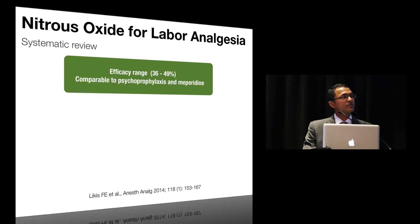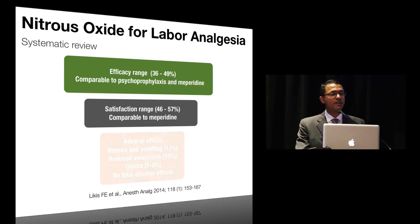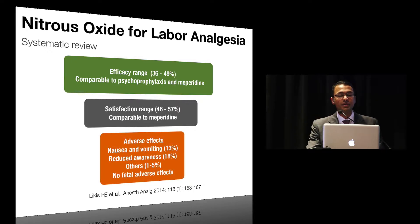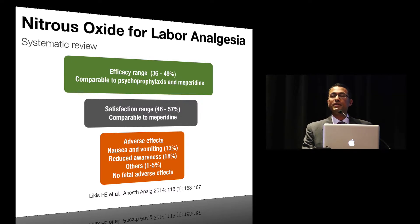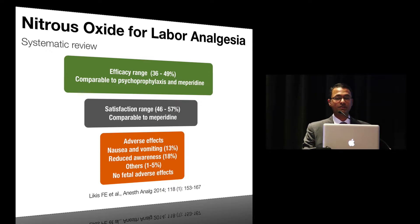The efficacy range for nitrous oxide is between 38 to 49%, comparable to psychoprophylaxis and meperidine. Maternal satisfaction scores were 46 to 57%, again comparable to meperidine. For adverse effects, there was almost a 13% incidence of nausea and vomiting, and more importantly, almost 18% — that is one in five — complained of reduced awareness of the birthing experience. There were also some cases of desaturation, but this was only a minority, and there were no acute fetal adverse effects with nitrous oxide use.